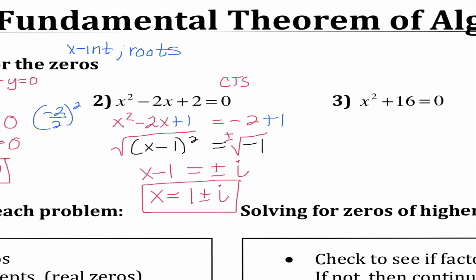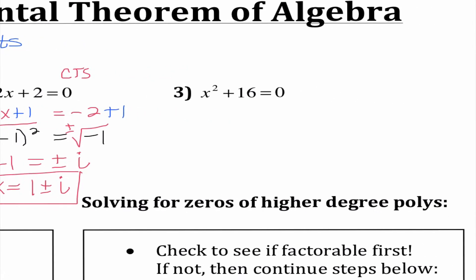If you guys use quadratic formula, we get the same exact answer. Number three is a good example of one where I would use the square rooting method. I'm moving that 16 over to the other side, then squaring root both sides, and I get x equals plus or minus 4i.